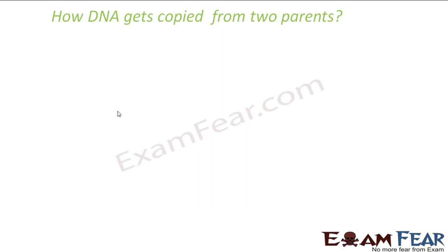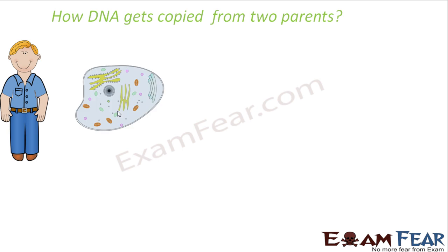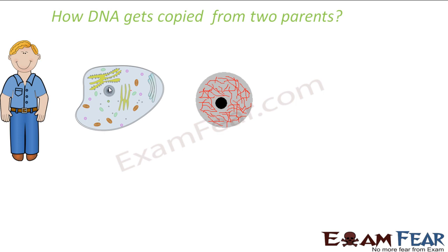Let us try to get some rough idea about how DNA gets copied from two parents. Now in one of the previous slides I already told you where DNA is located in our body. Inside our body, which is composed of cells, inside each cell we have a nucleus. When we look at this nucleus more closely, it looks somewhat like this where at the center we have a nucleolus, and these thread-like structures are chromosomes.